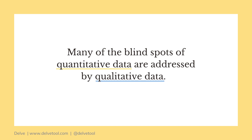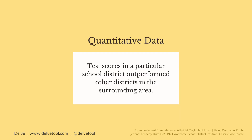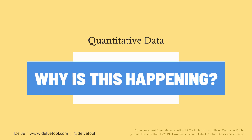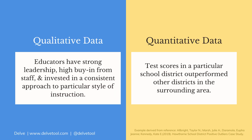Many of the blind spots of quantitative data are addressed by qualitative data. For example, quantitative data can tell you that the test scores in a particular school district have outperformed other school districts in the surrounding area, but it can't tell you why it's happening.